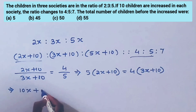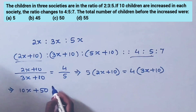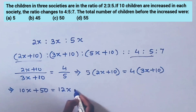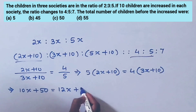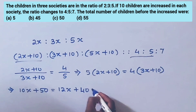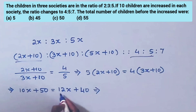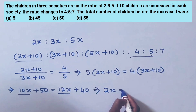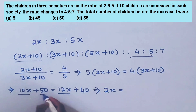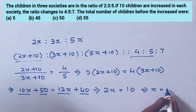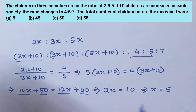Then 10x + 50 is equal to 12x + 40. That implies 12x minus 10x is equal to 50 minus 40, so 2x = 10, giving x = 5.